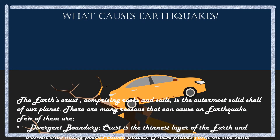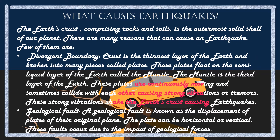What causes earthquakes? The earth's crust, comprising rocks and soil, is the solid outer shell of the planet. The crust is the thinnest, outermost layer of the earth and is broken into many pieces called plates. These plates float on the semi-liquid layer of the earth called the mantle, which is the third layer of the earth.